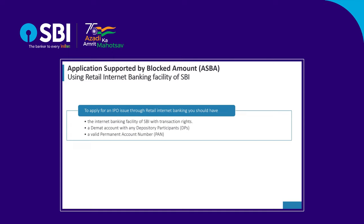To apply for an IPO issue through Retail Internet Banking, you should have the Internet Banking Facility of State Bank of India with transaction rights, a DMAT account with any depository participant, and a valid Permanent Account Number.